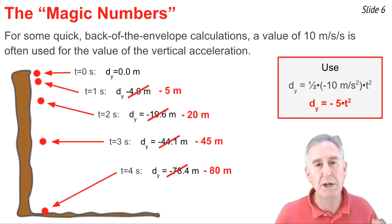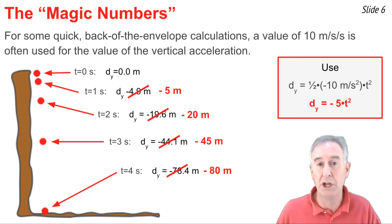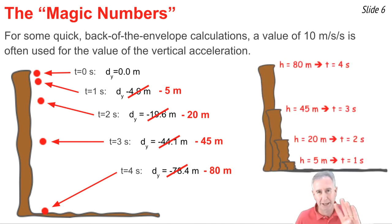We sometimes call these numbers the magic numbers, because by remembering them, we can quickly conclude what time it would take a projectile to fall if released or shot horizontally off the top of an 80 meter high cliff. It would take four seconds. Or off of a 45 meter high cliff, it would take three seconds. Or off of a 20 meter high cliff, it would take two seconds and one second off of a five meter high cliff.